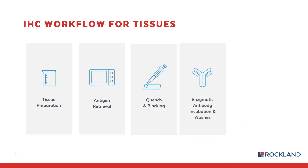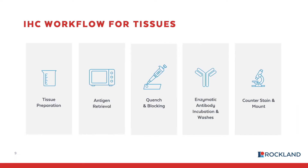Let's continue by discussing the IHC workflow. The workflow for IHC is very detailed and somewhat laborious, however it can be broken down into the following broad steps: first, preparation of the tissue, which will either be paraffin embedded or frozen; followed by antigen retrieval; quench and blocking of the tissue; enzymatic antibody incubation and washes, or the staining step; then counter stain and mounting; and finally imaging with a bright field microscope.